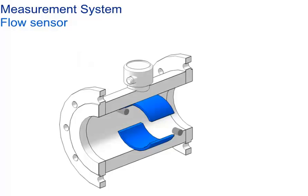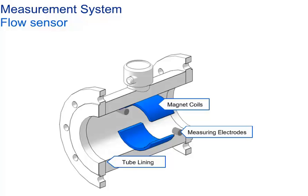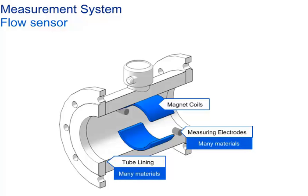Let's take a closer look at the flow sensor. It consists mainly of magnet coils — the coils and surrounding structure are designed to produce a consistent magnetic field across the whole pipe area — and measuring electrodes to pick up induced voltage. An electrically insulating tube lining is required to preserve the signal voltage and allow it to be transferred to the electrodes. The tube lining and the electrodes are wetted parts in direct contact with the fluid, so proper material selection for corrosion resistance and potable water approvals is vital.